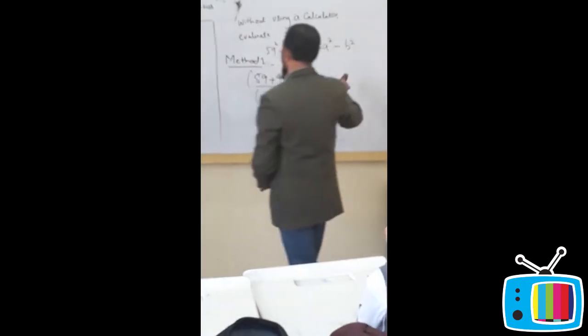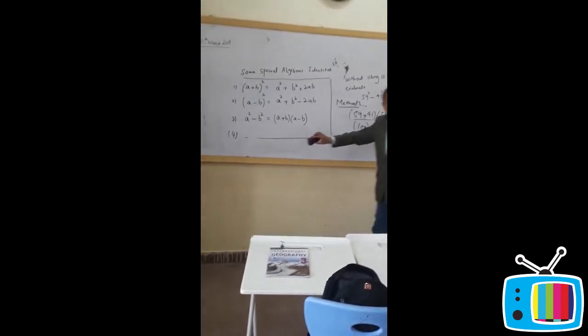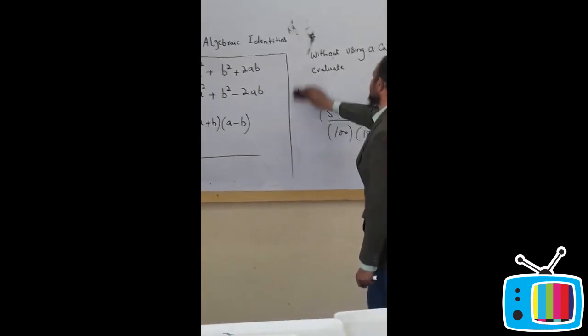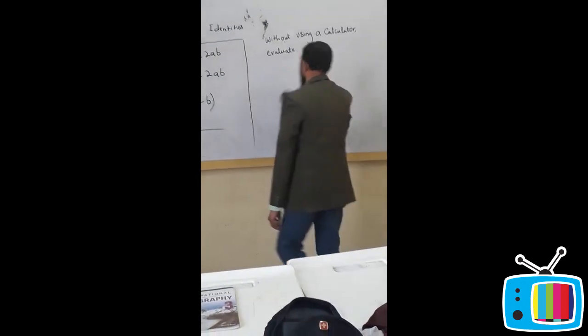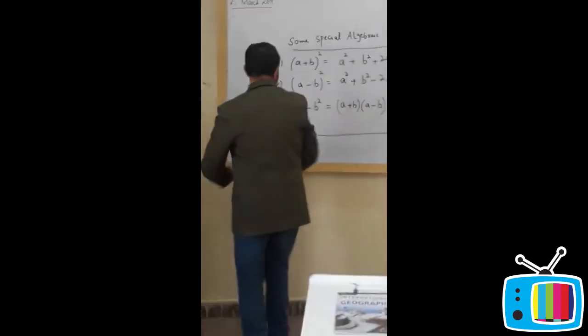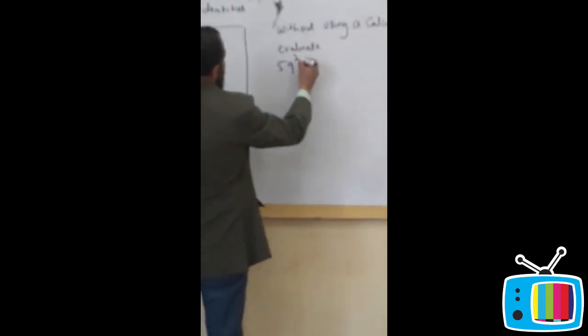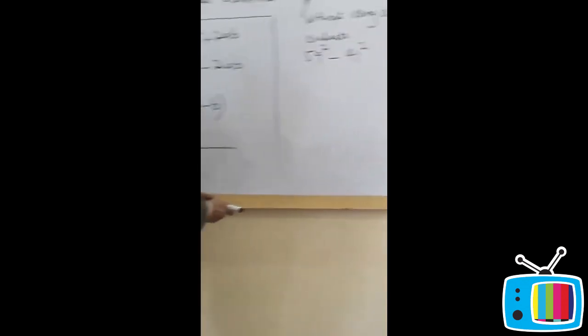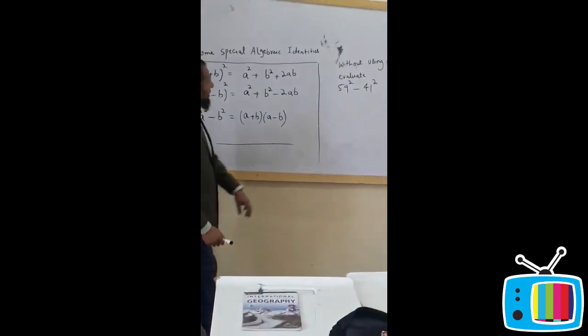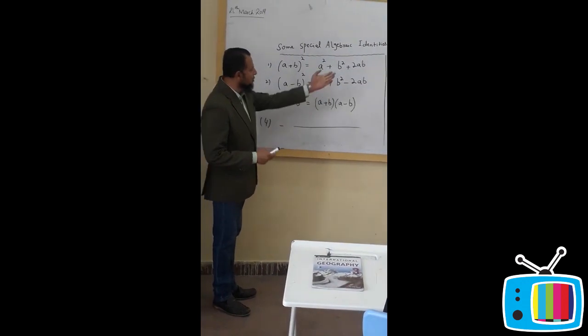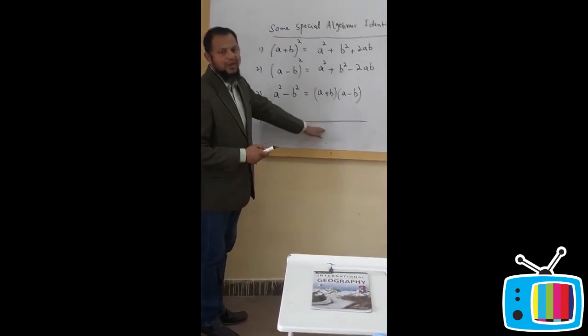Okay. Now, we have done this. So, let's see, how can we use any one of these identities to get the same solution? Okay. So, here we go. Now, our original question has been 59² minus 41². What I am going to do, let me think of it, which one I can easily apply to get the same solution which was 1800.